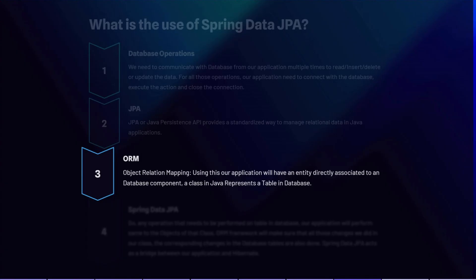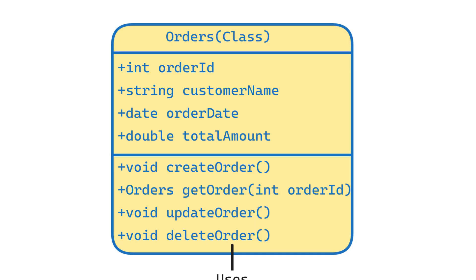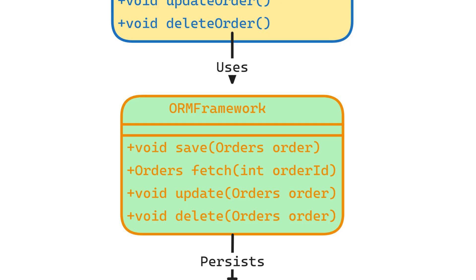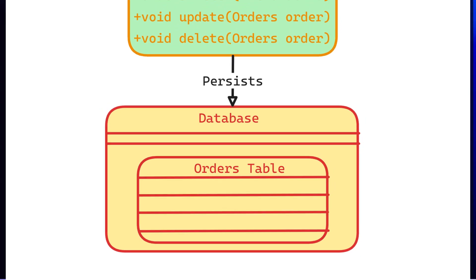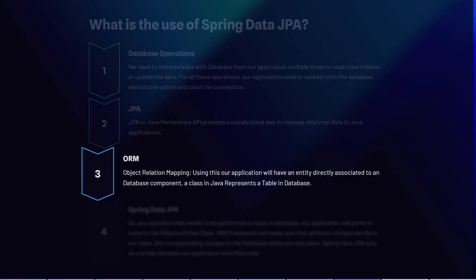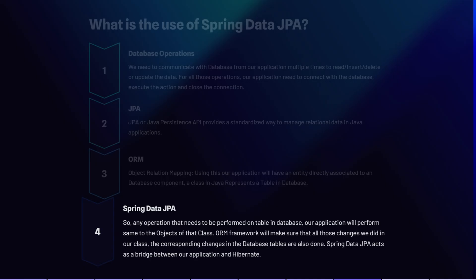In this model, an entity class in our application is directly associated with a database table. For example, if we have a table 'orders' in the database, we have a class 'Orders' with fields representing the table's columns. Any operation on the orders table is performed on the Orders class objects, and the ORM framework — Hibernate — ensures corresponding changes happen in the database. Spring Data JPA acts as a bridge between our application and Hibernate, letting us focus on business logic.